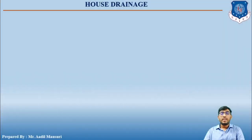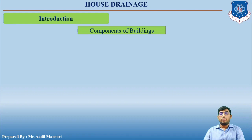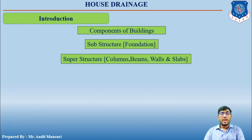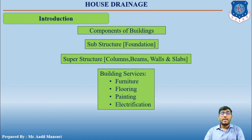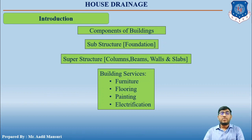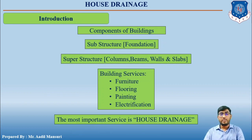Let us start with the introduction of house drainage. As we all know, there are several components of a building. One component is known as substructure, which includes the foundation, and another is known as superstructure, which includes columns, beams, walls, and slabs. Apart from this, there are several building services required to cater to our daily needs, such as furniture, flooring, painting, and electrification. But the most important service is house drainage, because after water is utilized, wastewater is generated and its disposal must be catered to.